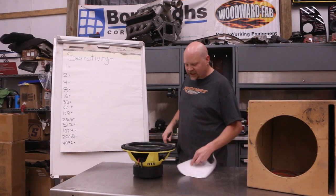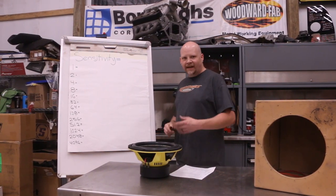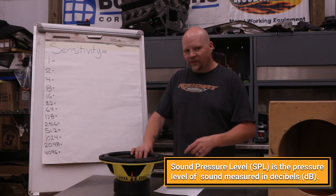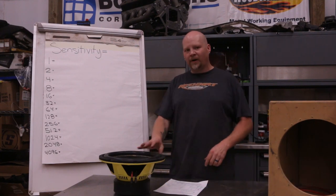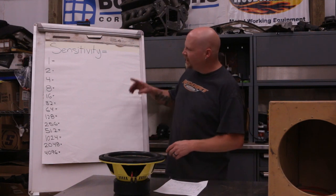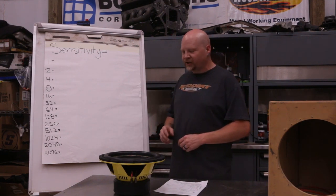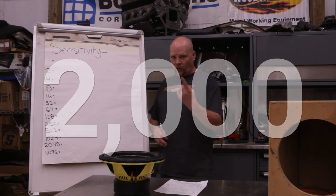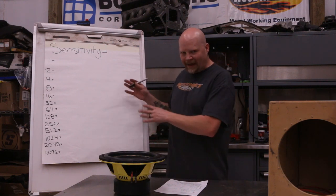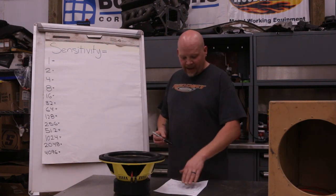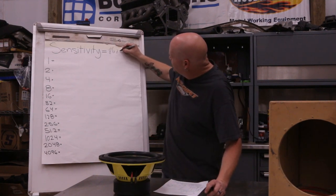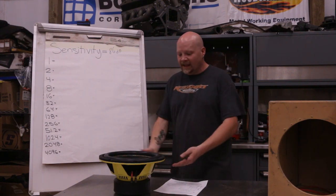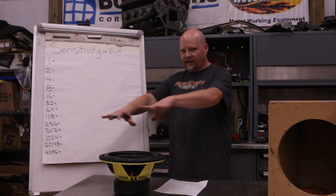I've already done my math and have a cheat sheet because I'm not a super fast math guy. For our subwoofer SPL example, we have a single Ground Zero 12-inch sub - this is a Radioactive model and is a dual 1-ohm. I'm going to show you what this looks like in one and two subwoofer configurations, and for our amplifier we're using a generic 2,000 watts. This particular sub has a sensitivity of 86 dB.